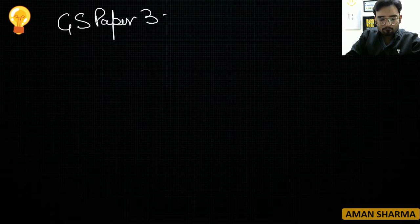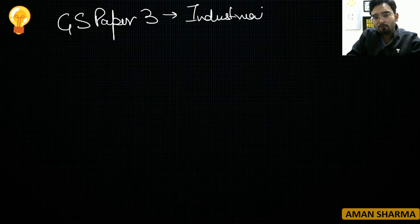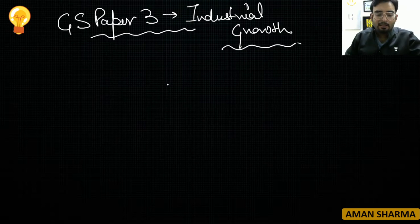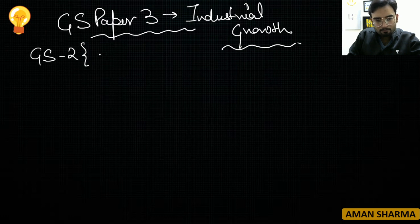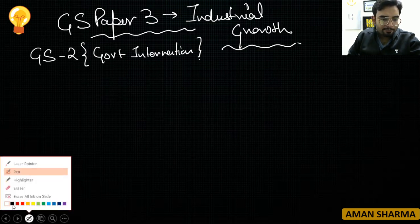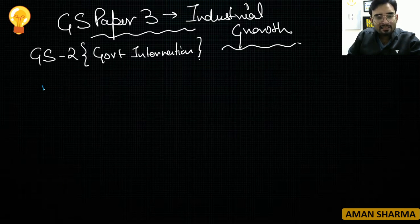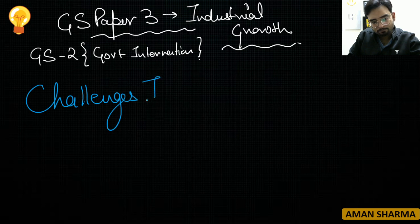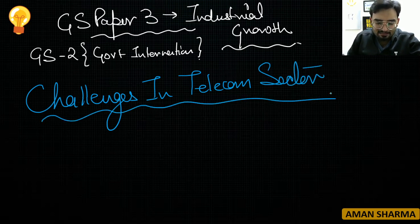Relating this news to your GS paper: this is part of GS Paper Number 3 — Industrial Growth, and GS Paper Number 2 — Government Intervention. The topic that can be asked is: challenges in the telecom sector.